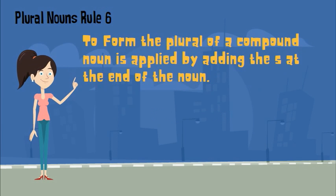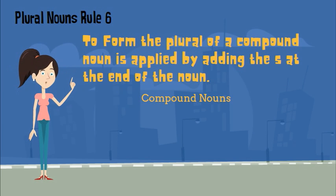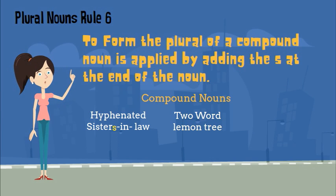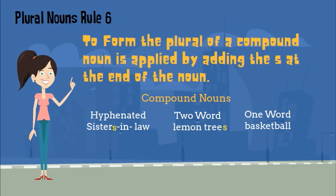Another rule to form the plural of a compound noun is applied by adding the S at the end of the noun. Here are some different examples of compound nouns. I have a hyphenated compound noun, sister-in-law — to make this plural, I would add an S on sister for sisters-in-law. I can also look at a compound noun that's two words, lemon tree — I would add the S after tree for lemon trees. And the last one is a one-word compound noun, basketball — I would simply add the S at the end for basketballs.